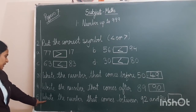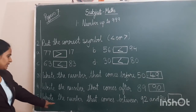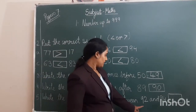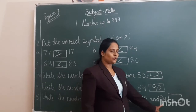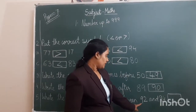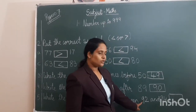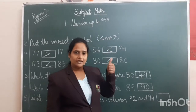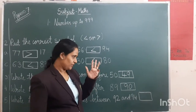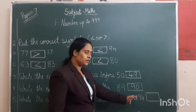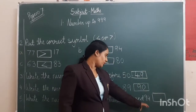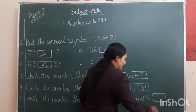5th question: write the number that comes between 92 and 94. We will do the counting — 91, 92, 93, 94. So which number comes between 92 and 94? 93.